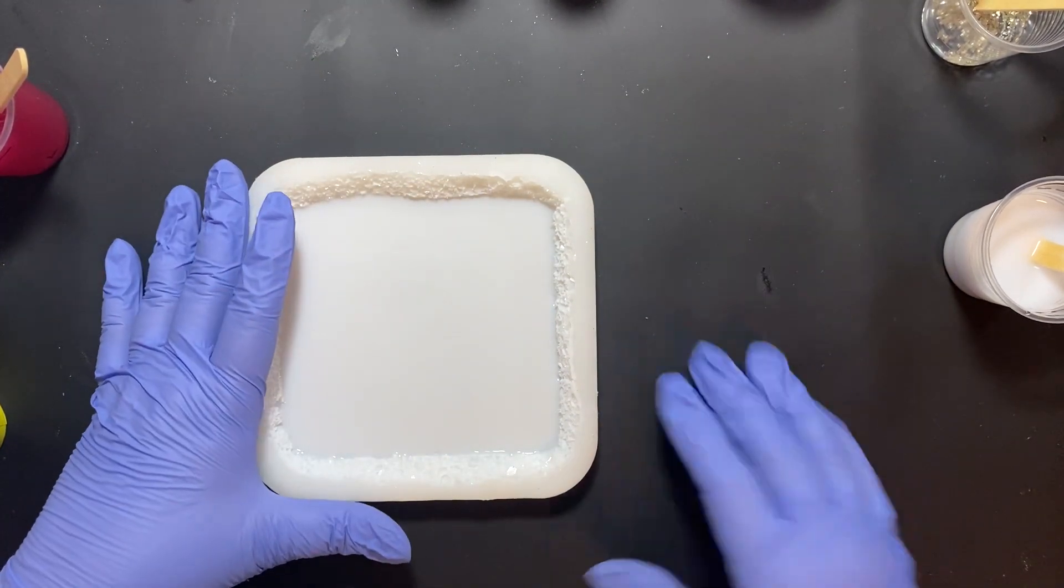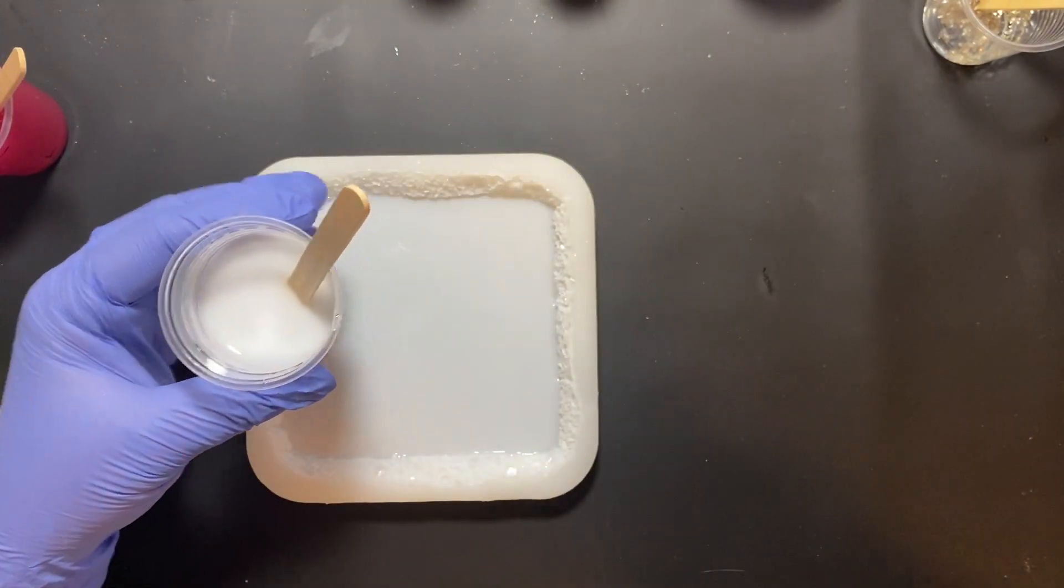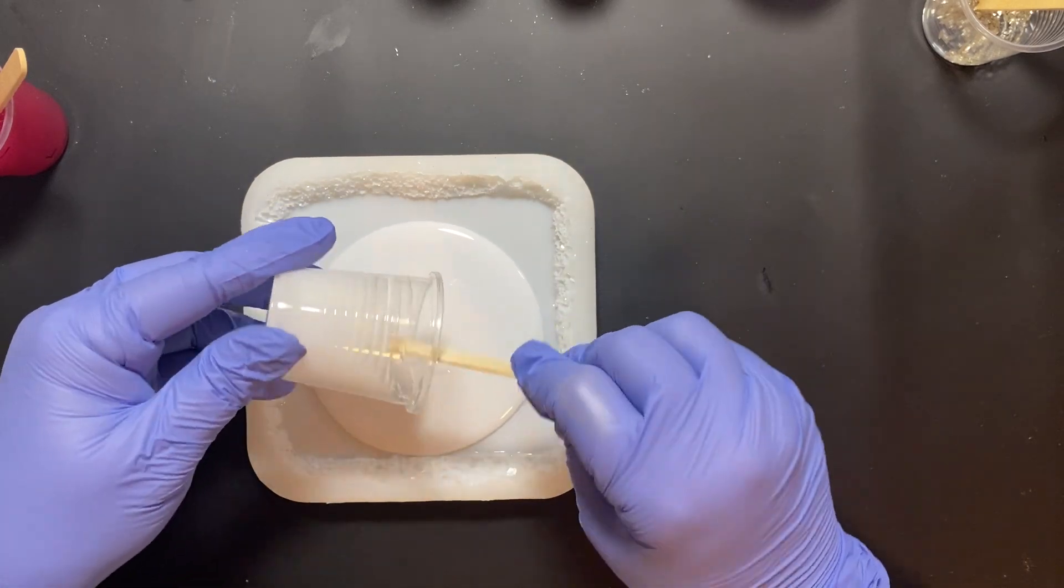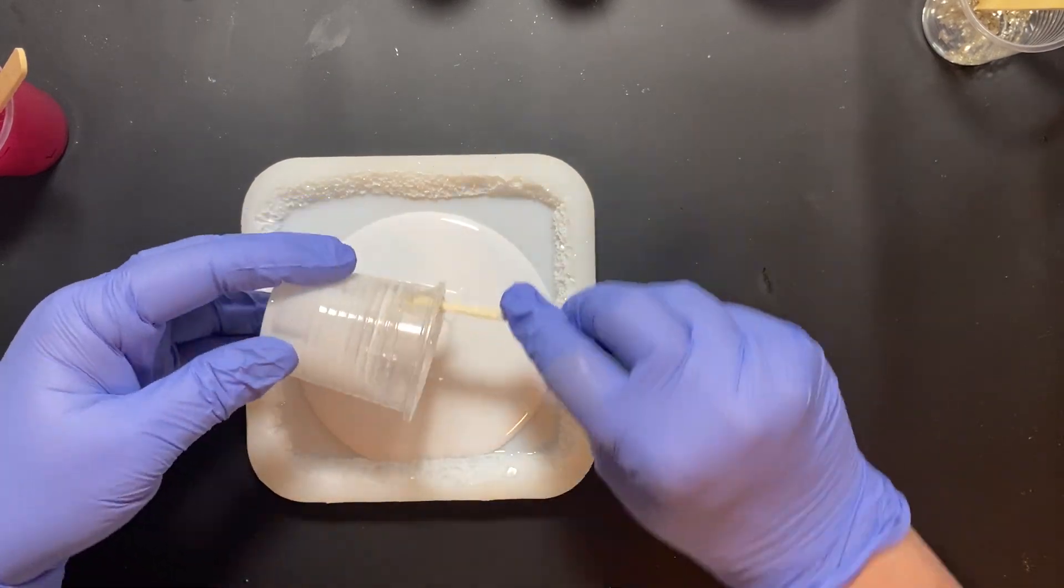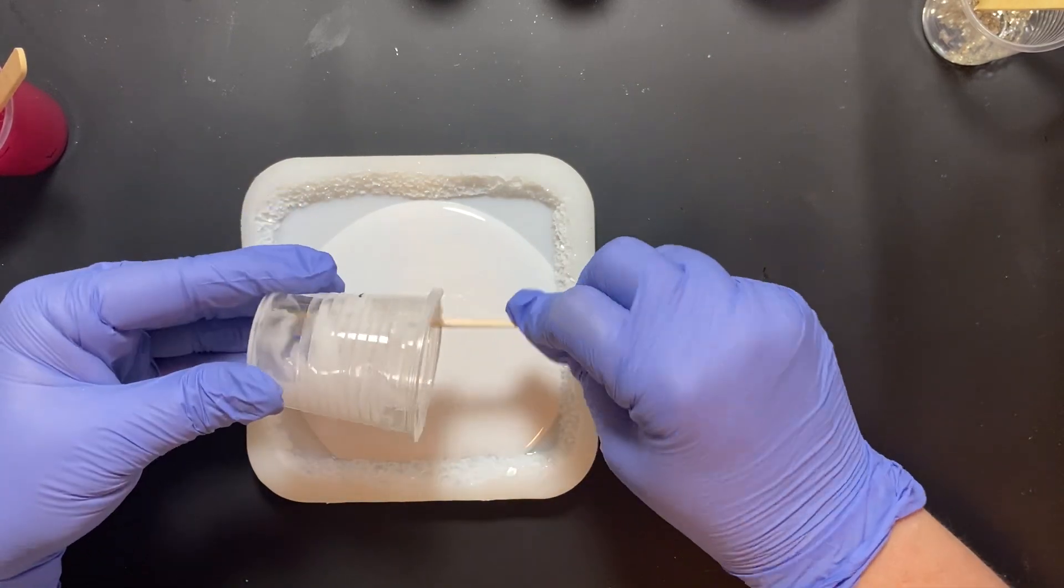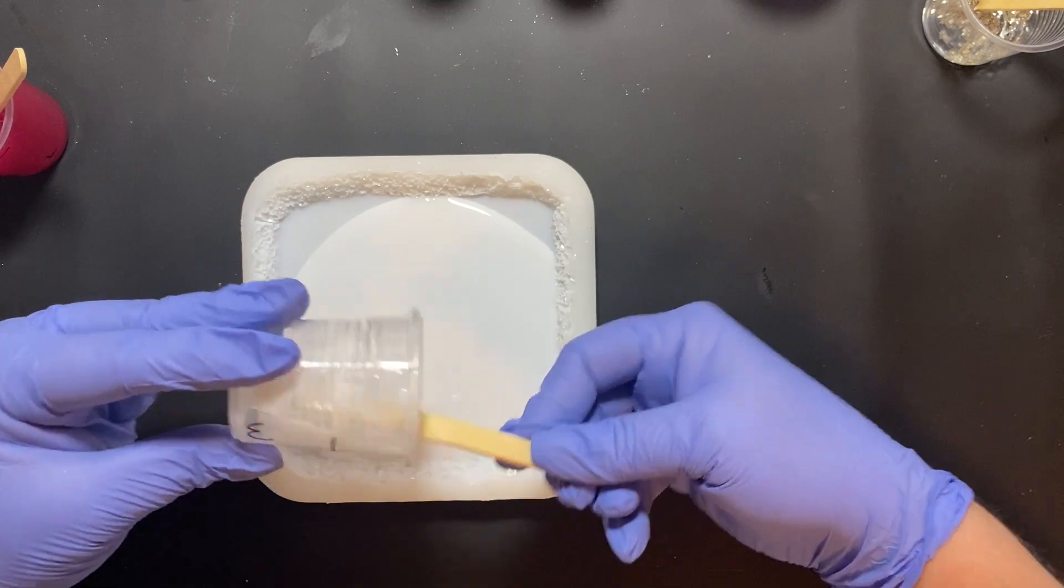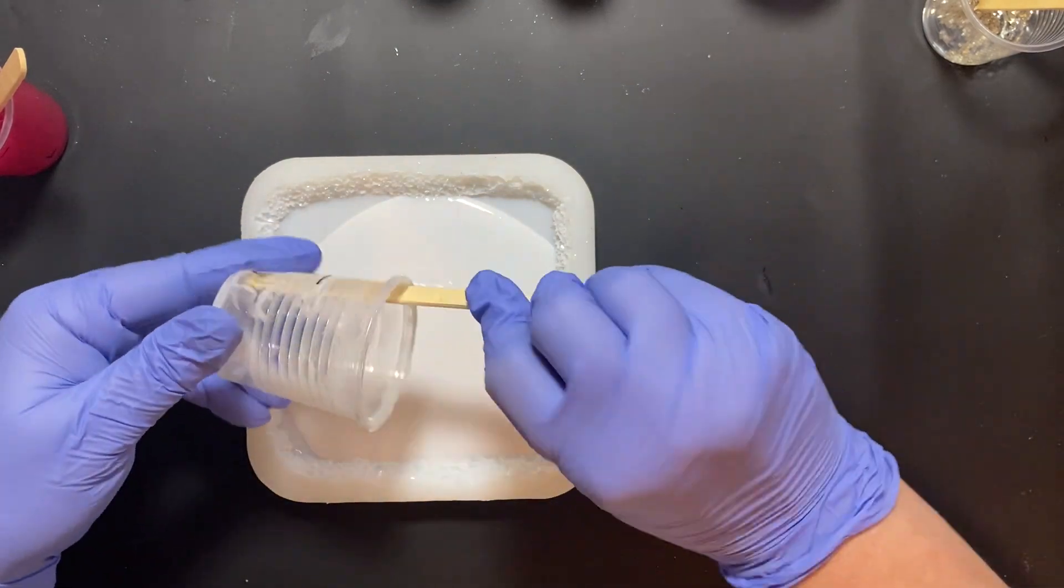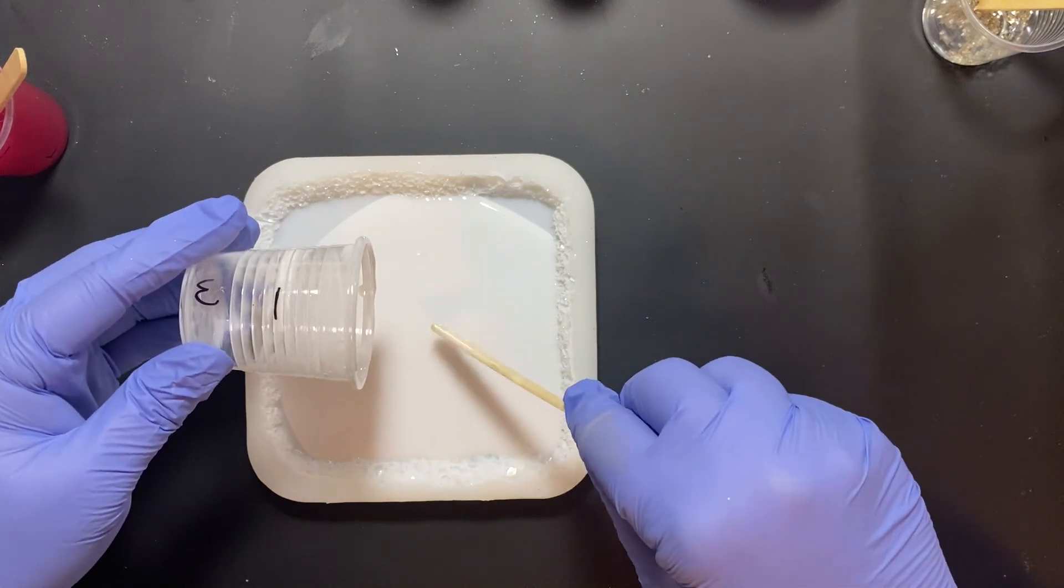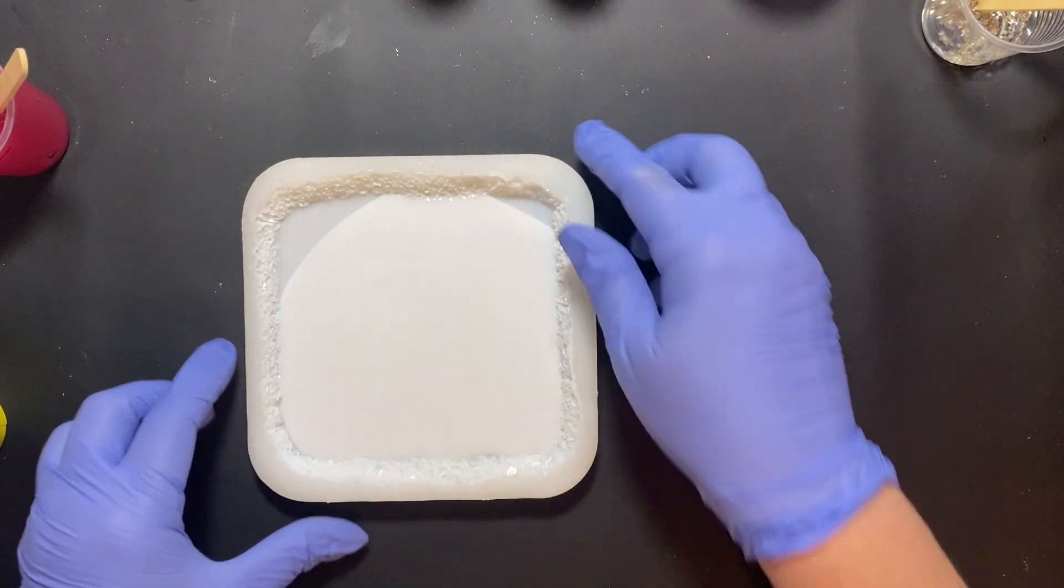Okay, so here we go. Gonna start off with the white. I'm gonna pour it in here and make sure it covers all of the bottom, the whole bottom. And if it doesn't, what I'll do is I'll pick it up and just kind of move it around a little bit just so that it has a chance to get everywhere.